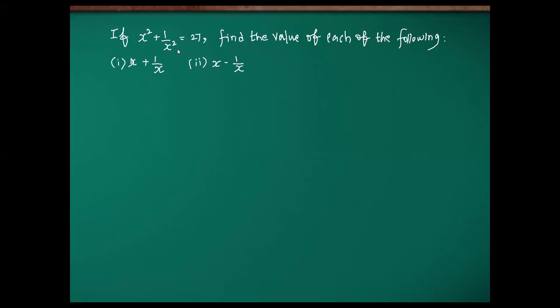If x square plus 1 by x square is equal to 27, find the value of each of the following: (i) x plus 1 by x, and (ii) x minus 1 by x. We have 2 questions.